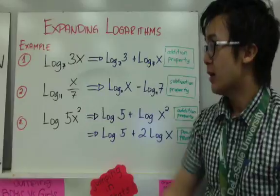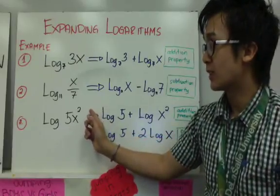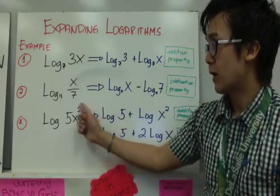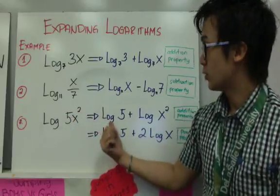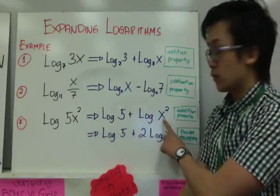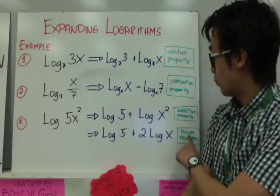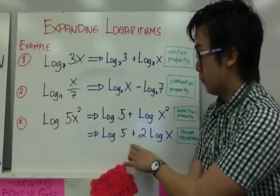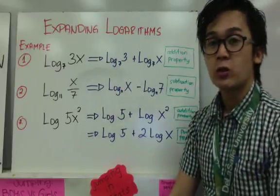Like example number 3, we have logarithm of 5x squared. The properties we'll use here to expand it are the addition property and the power property. First, use the addition property to separate it: logarithm of 5 plus logarithm of x squared. Since the second term has an exponent, we can further simplify it using the power property. So the expression becomes logarithm of 5 plus 2 times logarithm of x. That's how you expand logarithms.